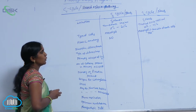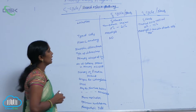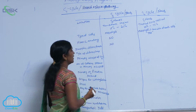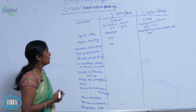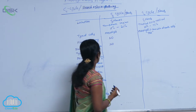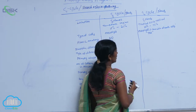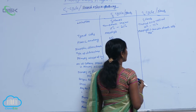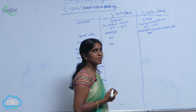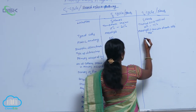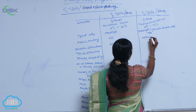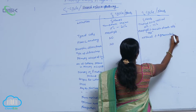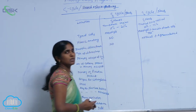Are dimorphic chloroplasts present in the C3 cycle? No — only a single type of chloroplast is present in the mesophyll cells of C3 plants. But in the C4 cycle, dimorphic chloroplasts are present: normal chloroplasts are in the mesophyll cells, while agranulated chloroplasts are present in the bundle sheath cells.